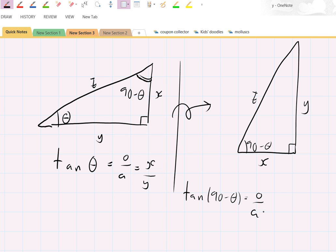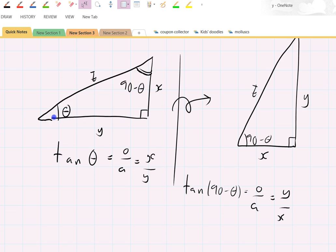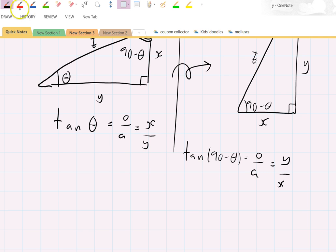So look, these two expressions - they're just reciprocals of each other. So what that tells me is that tan theta equals one over tan of 90 minus theta. That's quite nice, isn't it?